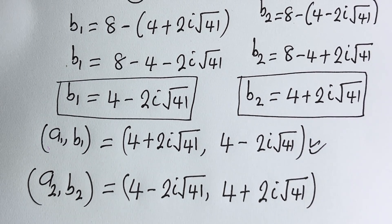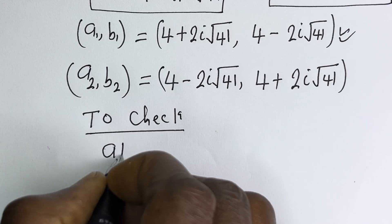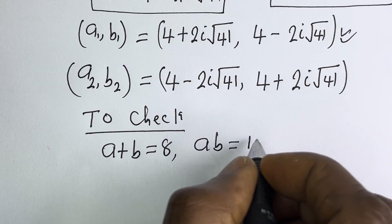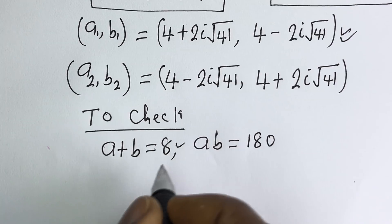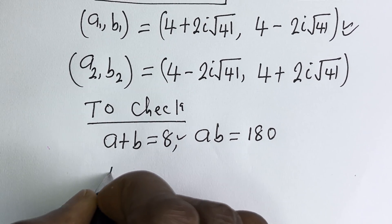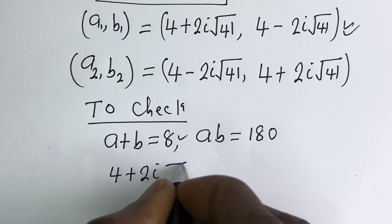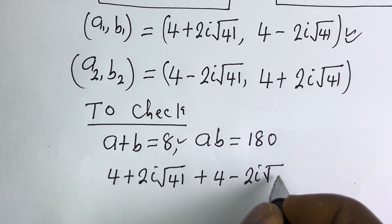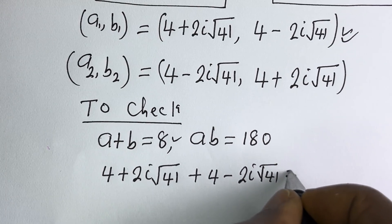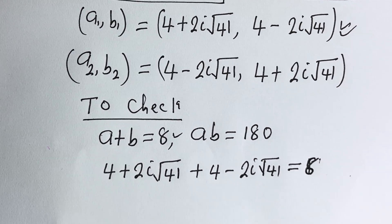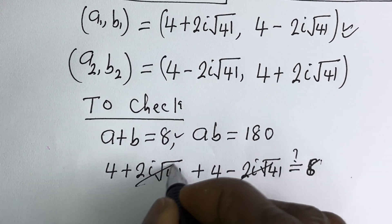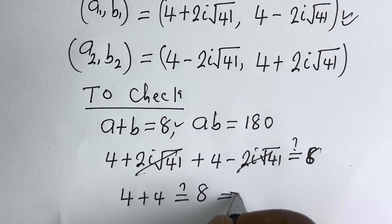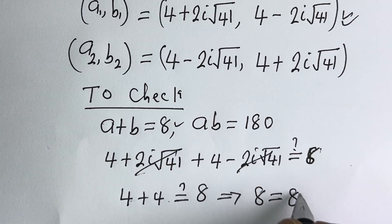We may check to confirm if this answer is right or wrong. Let's check using A1, B1. We have the given equations: A plus B equals 8, and AB equals 180. For A plus B: (4 plus 2i square root of 41) plus (4 minus 2i square root of 41). The imaginary parts cancel, leaving 4 plus 4, which must equal 8. And indeed 4 plus 4 equals 8, which is true.